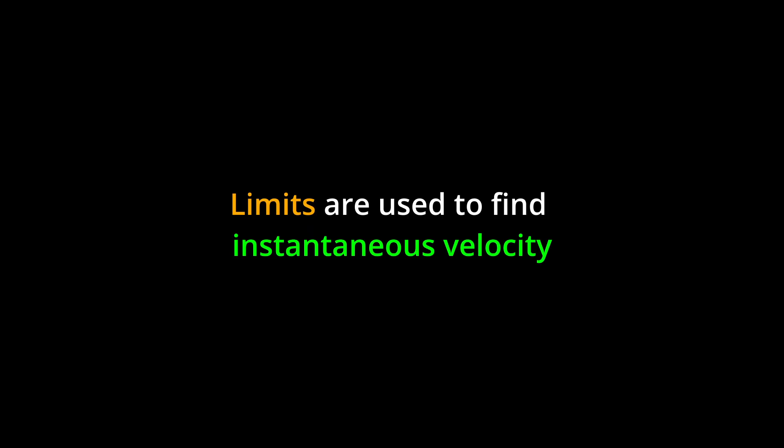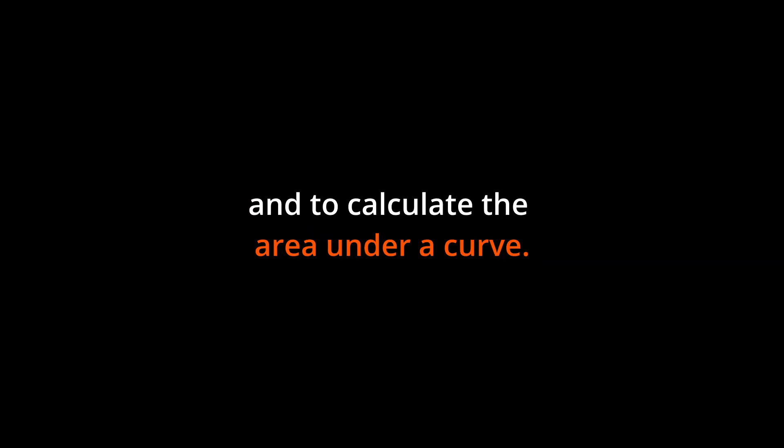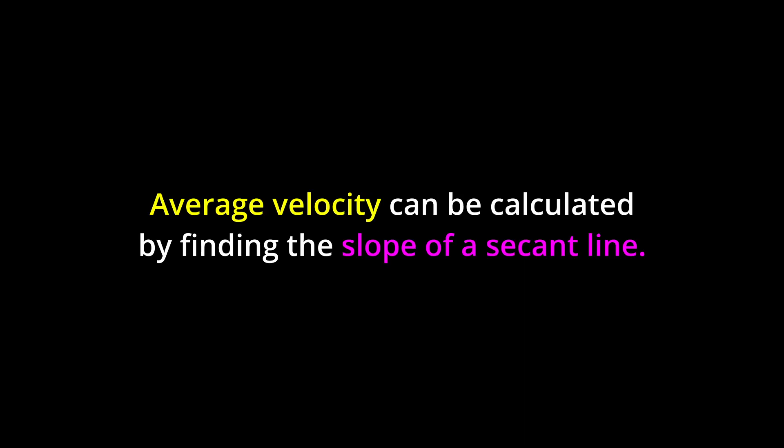Key points. Limits are used to find instantaneous velocity and to calculate the area under a curve. Average velocity can be calculated by finding the slope of a secant line.